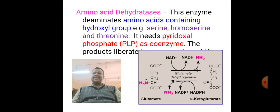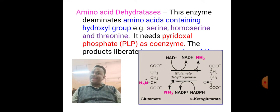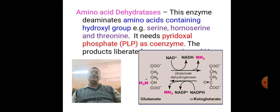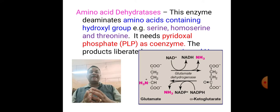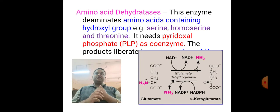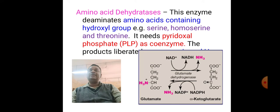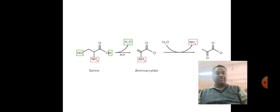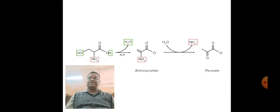Amino acid dehydratases are enzymes that remove the amino group from amino acids containing a hydroxyl group. These include amino acids such as serine, homoserine, and threonine. Dehydratases make use of the coenzyme PLP (pyridoxal phosphate), similar to transamination. The end products formed are ammonia and a keto acid. The picture shows how an amino acid in the presence of PLP is converted into pyruvate with the release of ammonia.